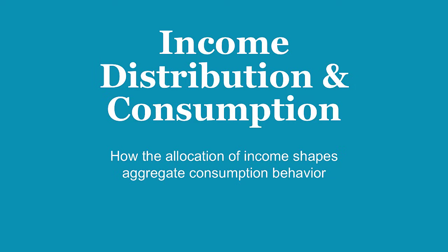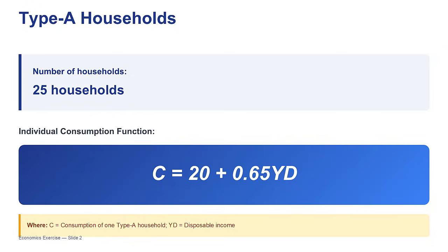Let's start with Type A. The problem states we have 25 of these households. Their individual consumption function is C sub A equals 20 plus 0.65YD. That 20 is their autonomous consumption — their baseline spending, what they spend even with zero income. And the 0.65 is their marginal propensity to consume, their MPC. So for every extra dollar they get, they spend 65 cents of it. They have a relatively high spending floor, but they're a bit more conservative with new income.